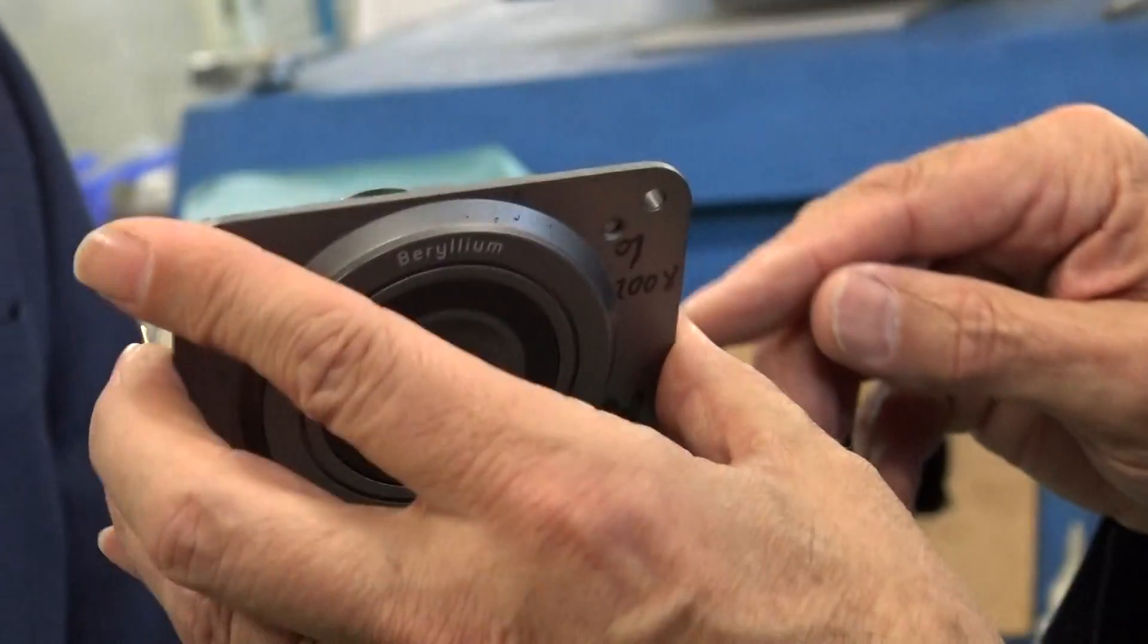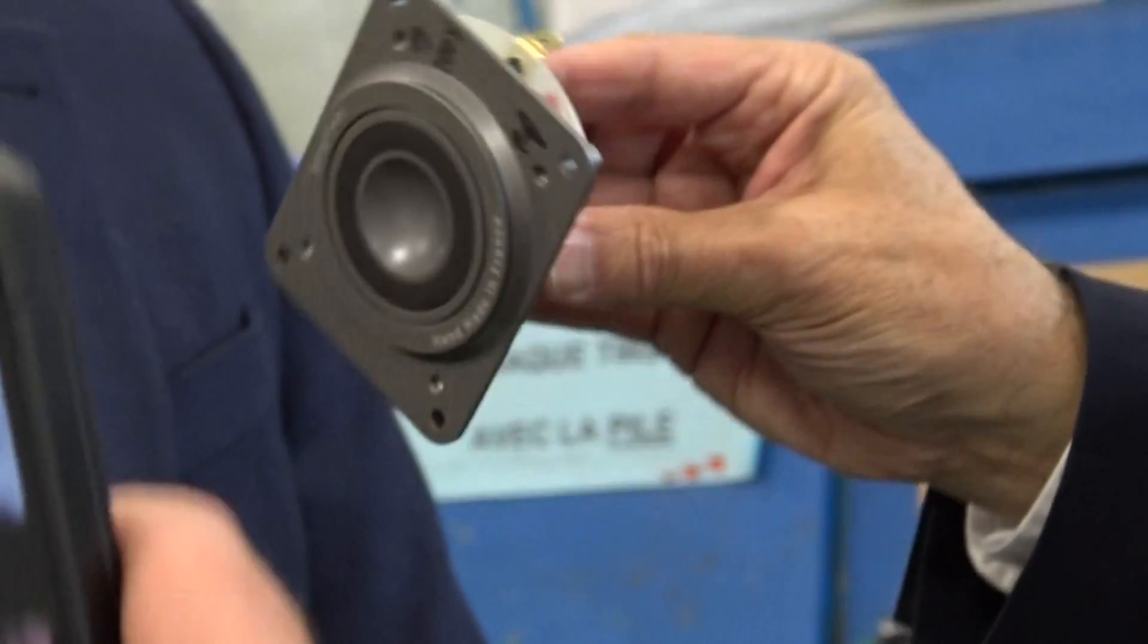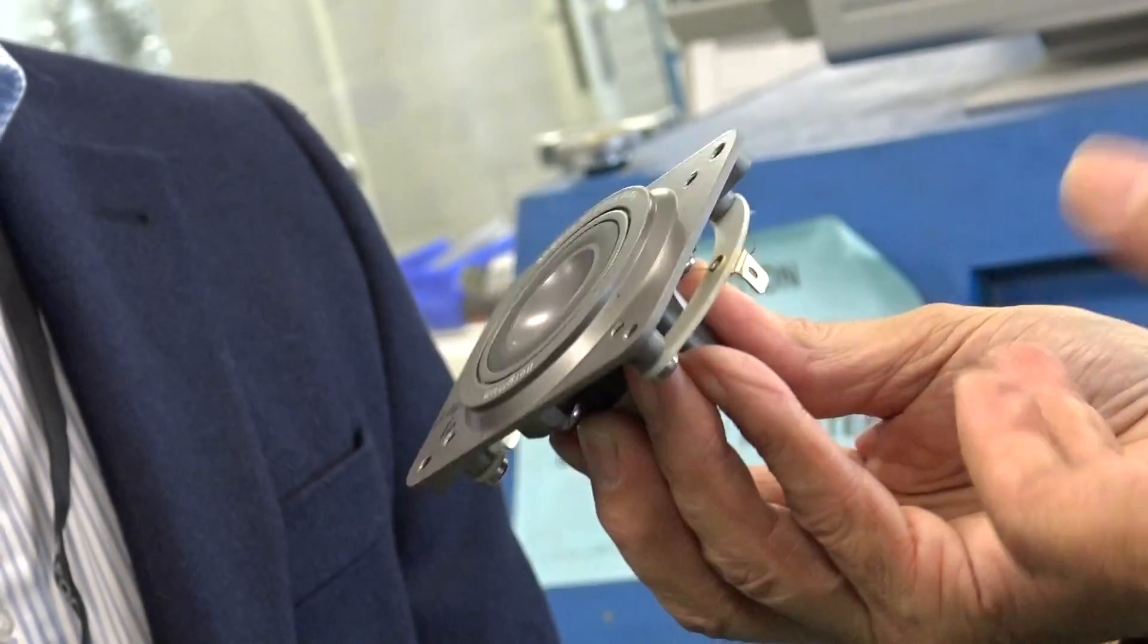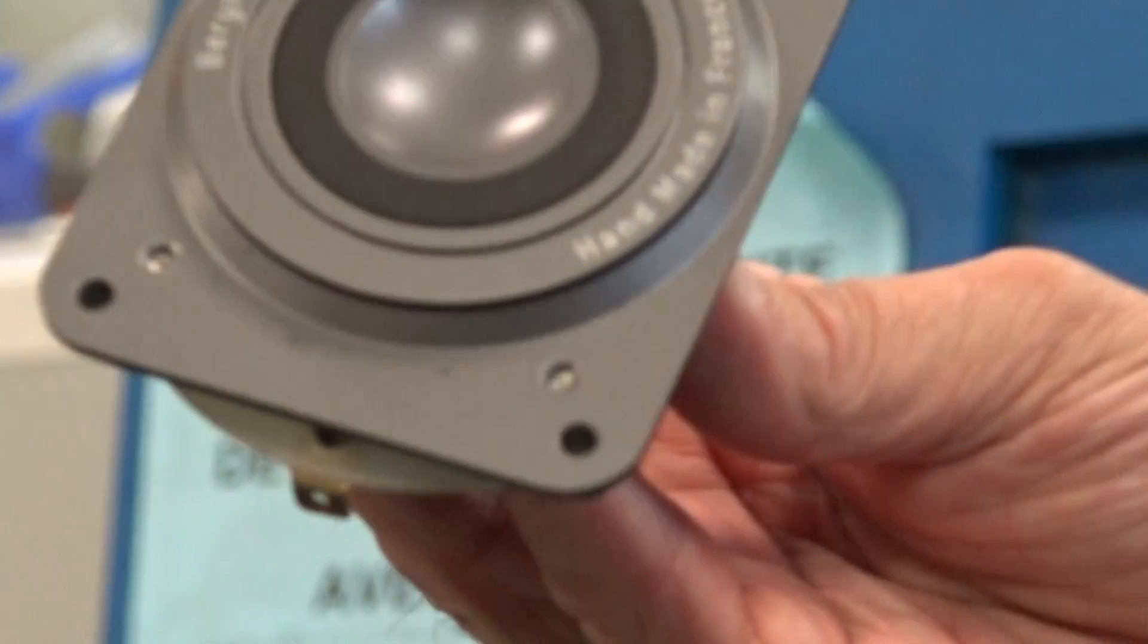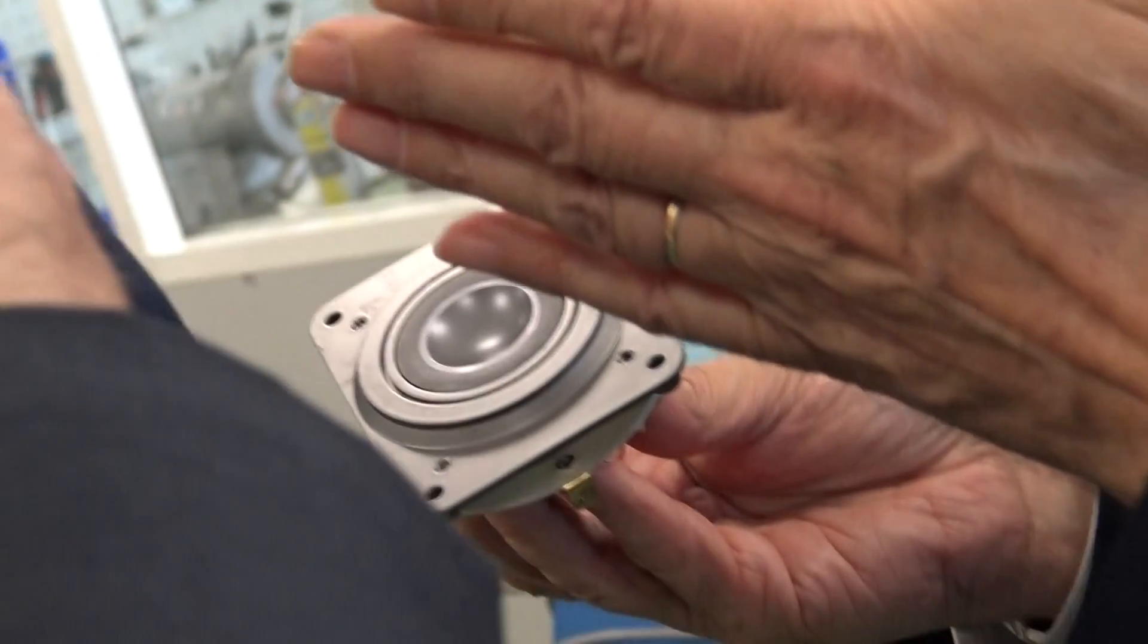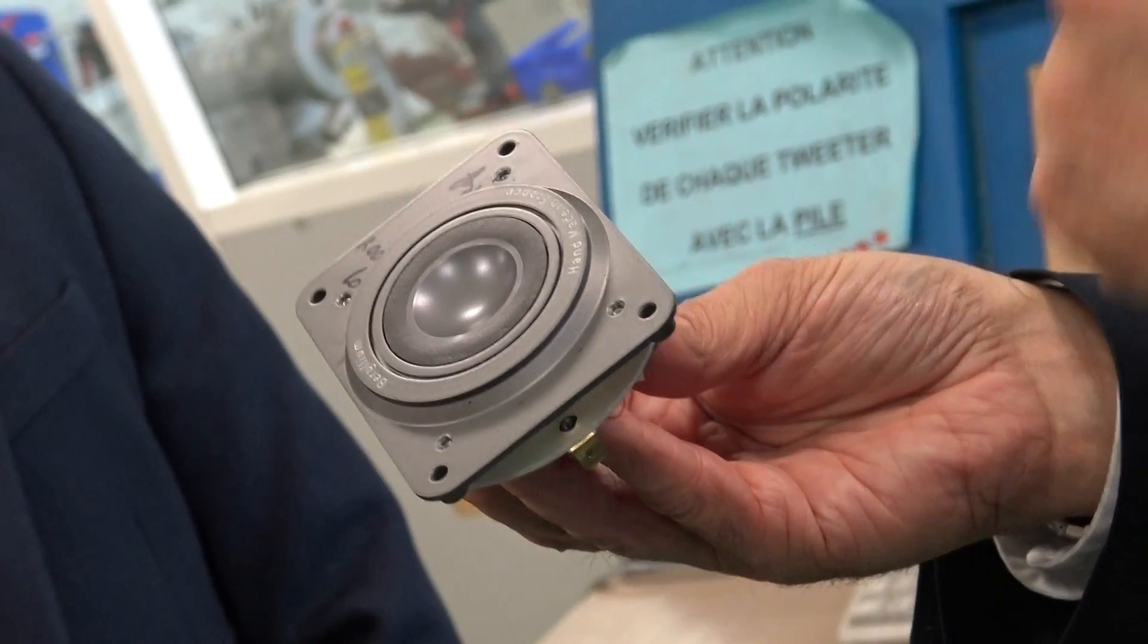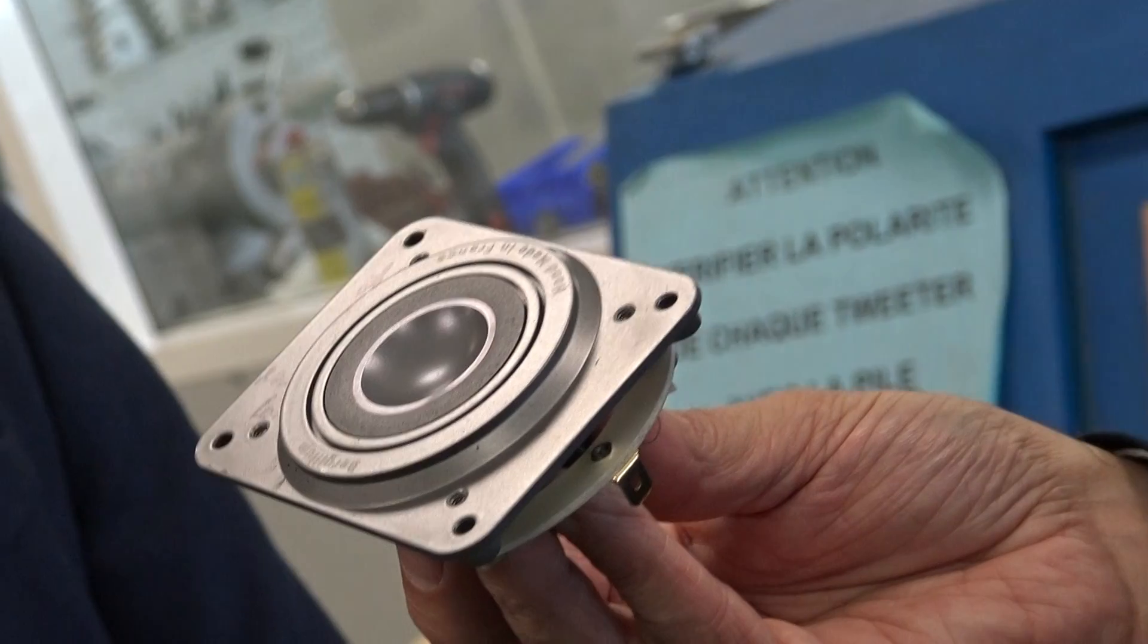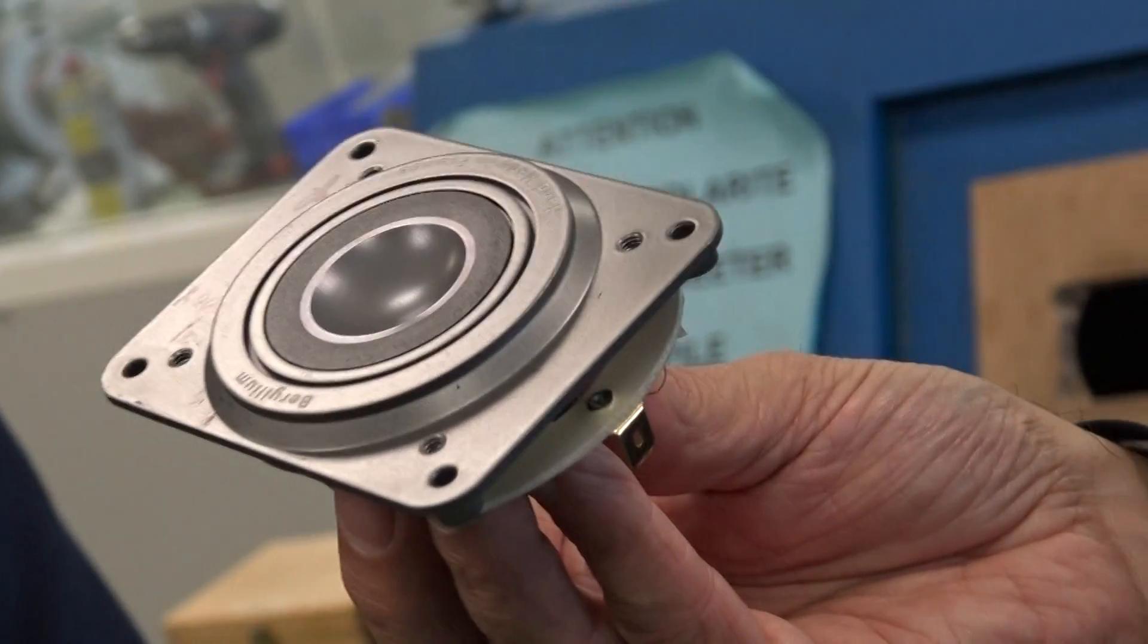And the voice coil, as you can see, it's totally open. As I explained, it's from 1,000 Hz to 40 kHz, 97 dB, 1 watt, 1 meter.